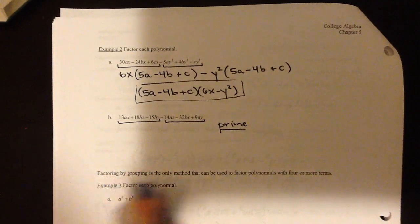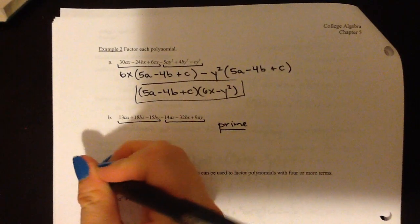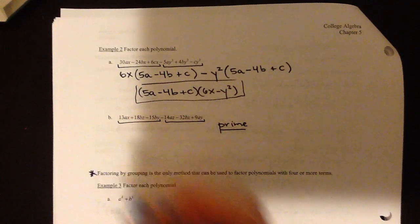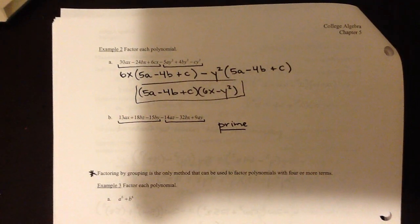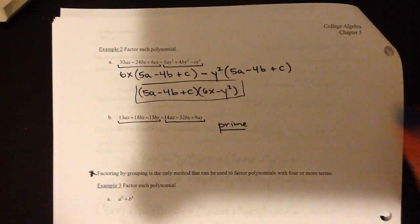Quick note: factoring by grouping is the only thing we can do if you've got four or more terms. There's no other method possible.